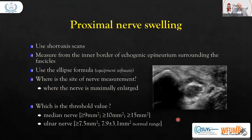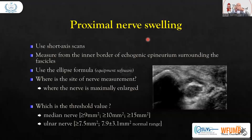We can get proximal nerve swelling. To assess the nerve, if we find it longitudinally, this is the area which is more swollen. We place the probe transversely and rotate it 90 degrees to get the cut section at the maximum area. Then we move it in both directions to find the maximum cross-sectional area. Use short-axis scans and measure from the inner border of the echogenic epineurium surrounding the fascicle — we measure the dark area, excluding the hyperechoic white area.